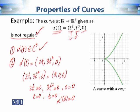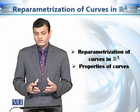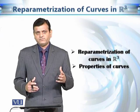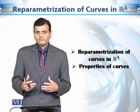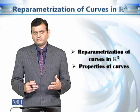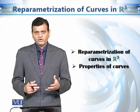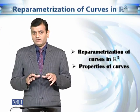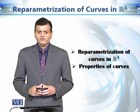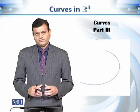This concludes our discussion. We covered two important concepts: reparameterization of a curve — the same geometrical path can be represented by many different functions, and if alpha and beta represent the same path, there exists a differentiable function h(s) such that beta(s) = alpha(h(s)), giving infinitely many parametric representations; and properties of curves, in particular the regular curve condition, which will be used in future discussions.